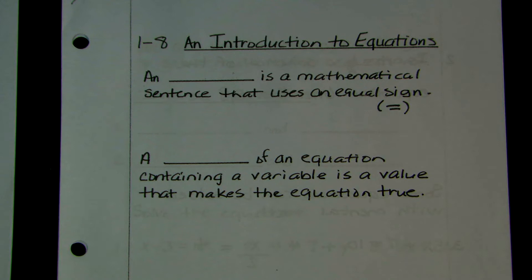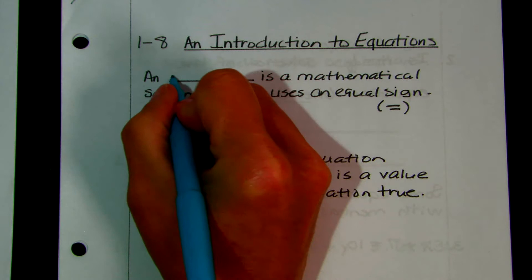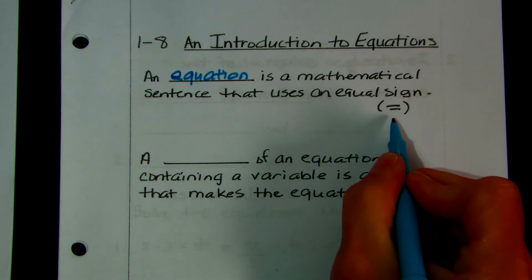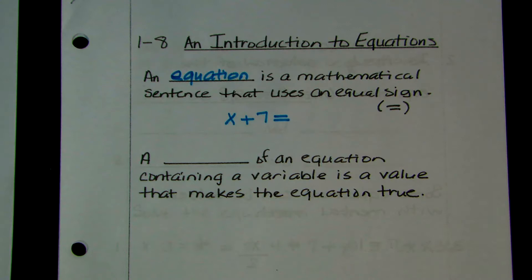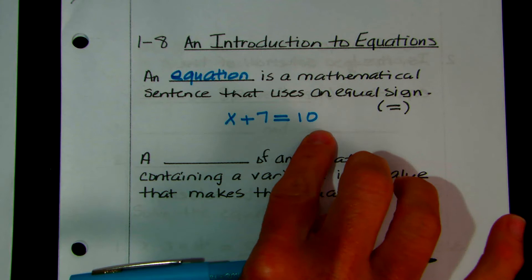An equation is a mathematical sentence that uses the equal sign. That's the difference between an equation and an expression — the equation uses the equal sign. So this was an algebraic expression. We put in the equal sign, which is read in English as 'is,' and I can just put a number. So x plus 7 equals 10, or 'the sum of x plus 7 is 10' if it was written in words.